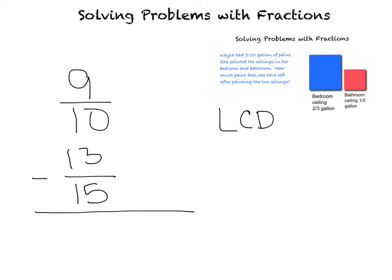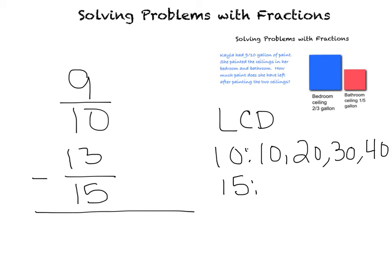So I'm going to take both of my denominators — ten and fifteen — my two different denominators, and I am going to find my least common denominator by doing the multiples. I want to find a denominator that both will have in common that's the lowest. So let's start: ten, twenty, thirty, forty. Now let's do fifteen. We're going to do multiples of fifteen and keep going until we find the lowest number that fifteen and ten have in common: fifteen, thirty.